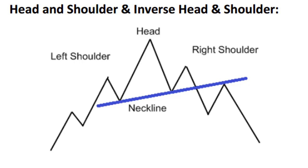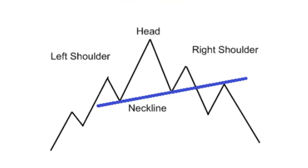Head and shoulder is a bearish reversal pattern that appears after an uptrend. This pattern is formed with three consecutive tops, with the middle one being higher than the other two. The middle top is called the head and the two side peaks are called the shoulders. On joining the intermediate troughs, we get the neckline. On ultimate break below the neckline, usually a short trade is taken with a stop loss above the top of the nearest shoulder. The target is usually considered as the distance between the neckline and head, projected from the point of break. An inverse head and shoulder is just the mirror image and acts as a very effective bullish reversal pattern after a sustained downtrend.